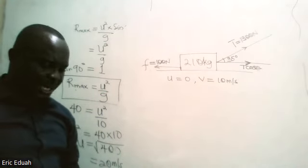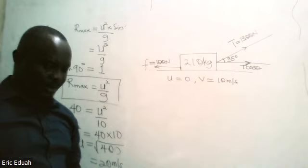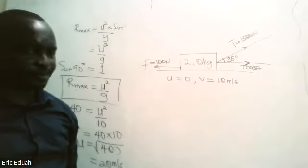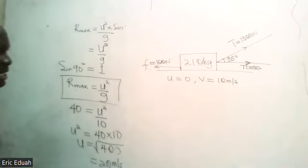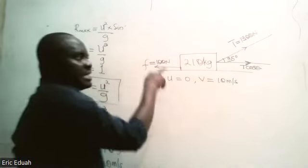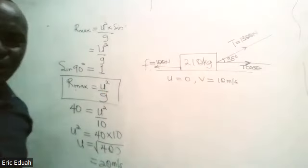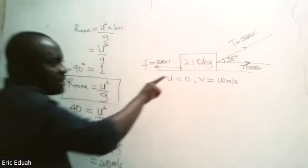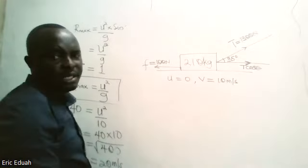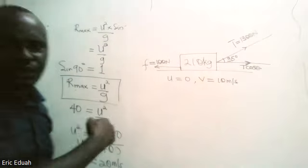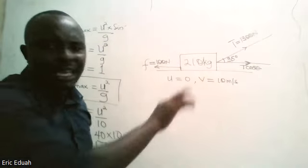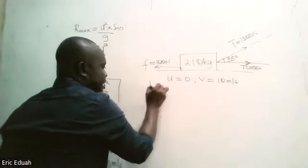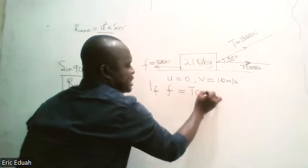The question asks us to calculate the distance covered by the body. Since we have initial velocity, final velocity, we will use one of the equations of motion. However, there is an effective force T cos theta pulling the body and an opposing frictional force of 100 newtons. If these two forces are not equal — if friction is not equal to T cos theta — then there will be a net force and we can find the acceleration to determine the distance.